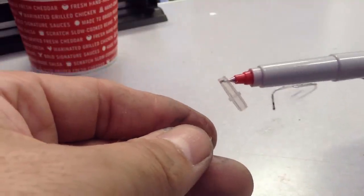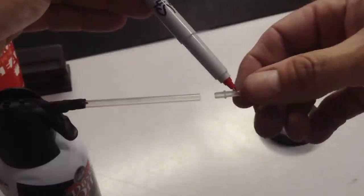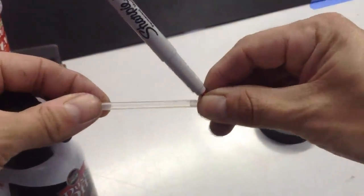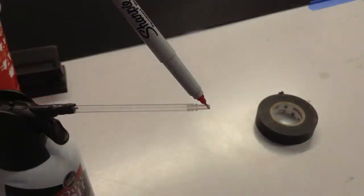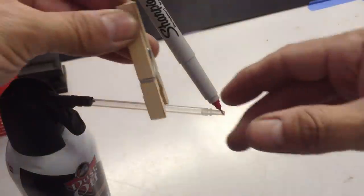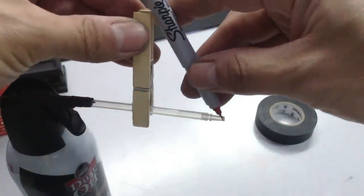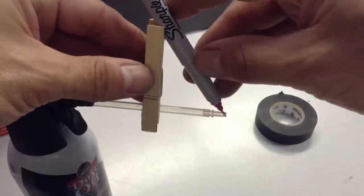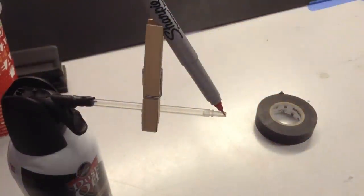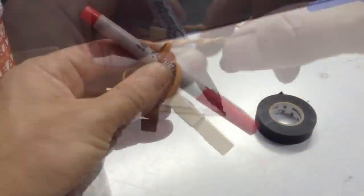Now we can reattach the end piece back on the straw. Here I'm using a clothespin to provide support for the pen, and we'll use a regular rubber band to hold those pieces together.